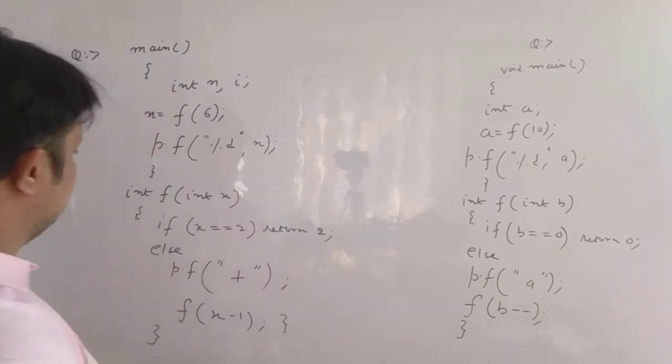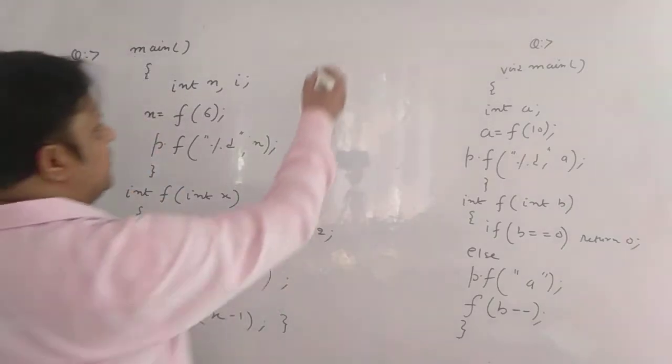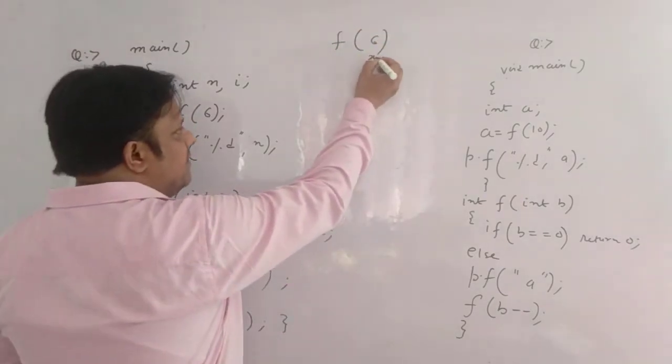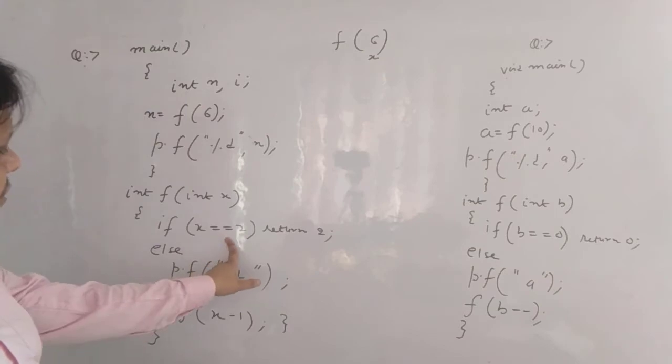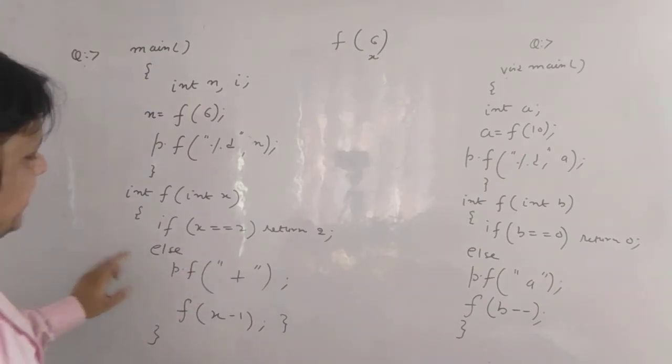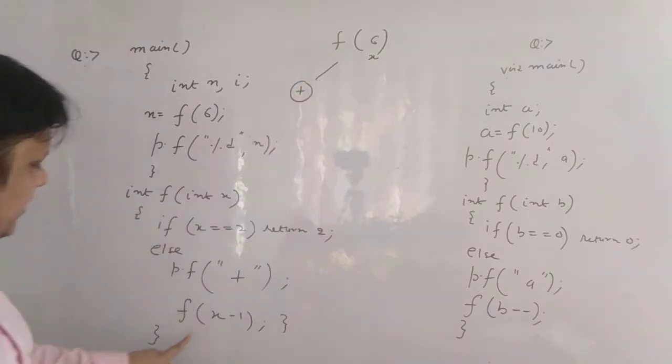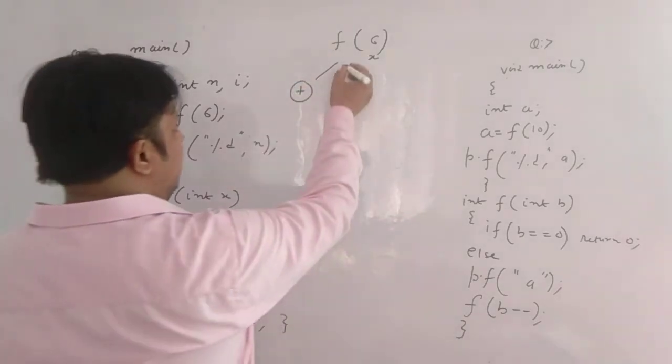So here the x is 6. So we are calling this function f(6). This is your x. So if x == 2, condition false. So else print f plus. So what we will print? Plus x printed and then function x minus 1.